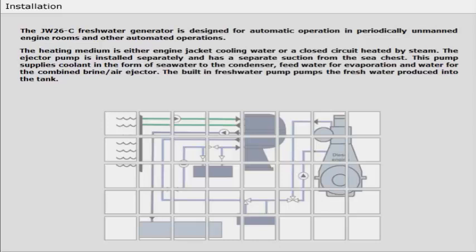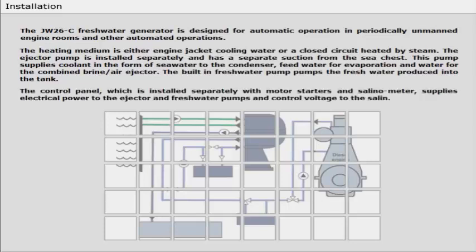The built-in fresh water pump pumps the fresh water produced into the tank. The control panel, which is installed separately with motor starters and salinometer, supplies electrical power to the ejector and fresh water pumps and control voltage to the salinometer.